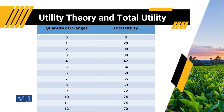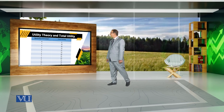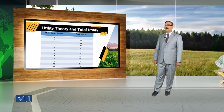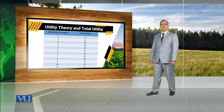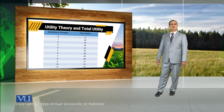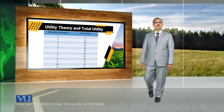In this table, to understand utility theory and total utility, we report the quantity of oranges in the first column and total utility in the second column. If someone uses 0 units of oranges, utility is 0 utils. Against one unit of oranges, the consumer gets satisfaction equal to 20. With 2 units, satisfaction equals 30. Up to unit 11, there is a consistent increase in total utility. But after unit 11, using the 12th unit of orange causes total utility to decrease. Whenever a consumer uses a commodity consistently, total utility increases up to a certain maximum point and then starts decreasing.